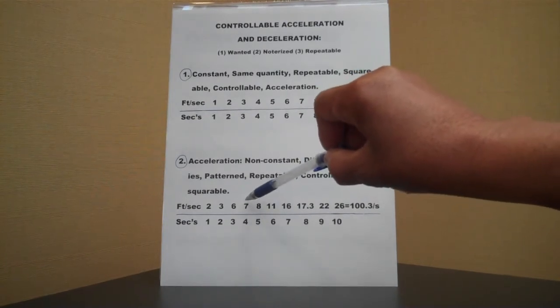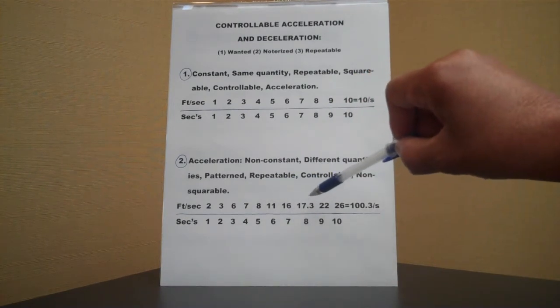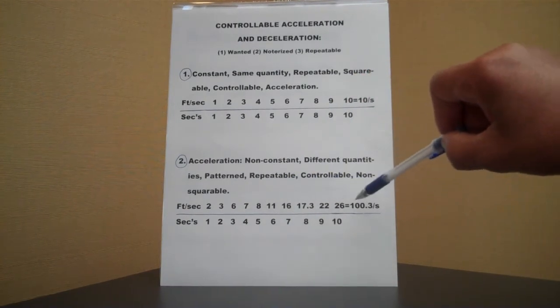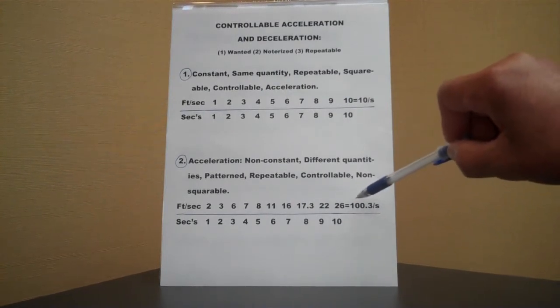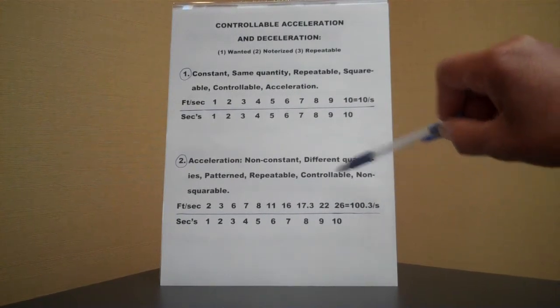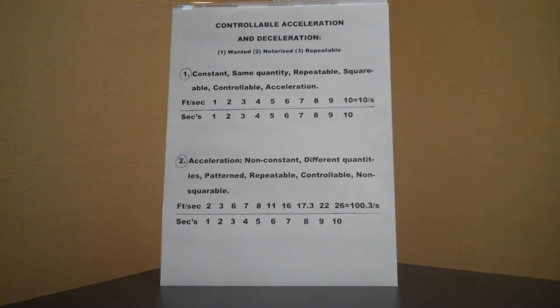Then, seven feet to that in the fourth second. As you can see, eight, eleven, sixteen, seventeen point three, twenty-two, twenty-six. Until, at the end, in ten seconds, you are going one hundred point three feet per second. Let's continue.